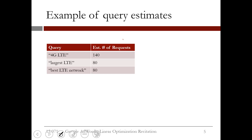For the example that we have been building so far, let's suppose that we expect to see '4G LTE' 140 times, 'largest LTE' 80 times, and 'best LTE network' 80 times as well.